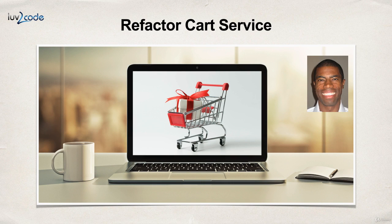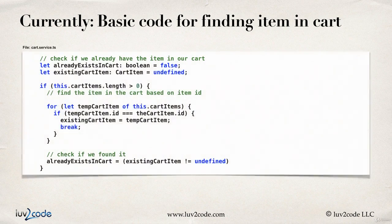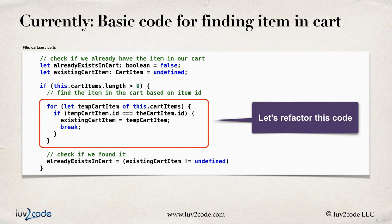In this video, we're going to refactor the cart service. Currently we have some very basic code for finding an item in the cart. We have this for loop. We loop over each item in the cart and we make some comparisons. This is the code that we're going to refactor by using a special method available for arrays.